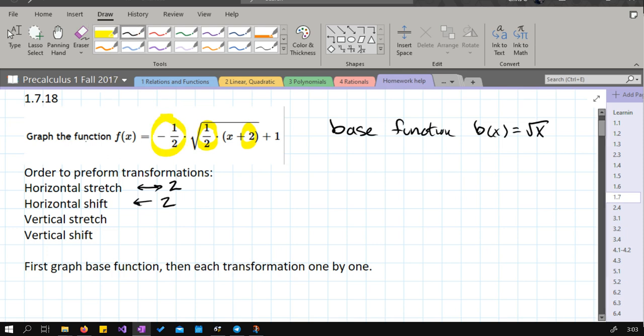Vertical stretch, negative one half. So we're going to stretch it. Now this does stretch one half as tall, but the negative means all the positive y values become negative and vice versa. Now last is vertical shift, that plus one right there. So that means up one. All right, so ready to do all these graphs.